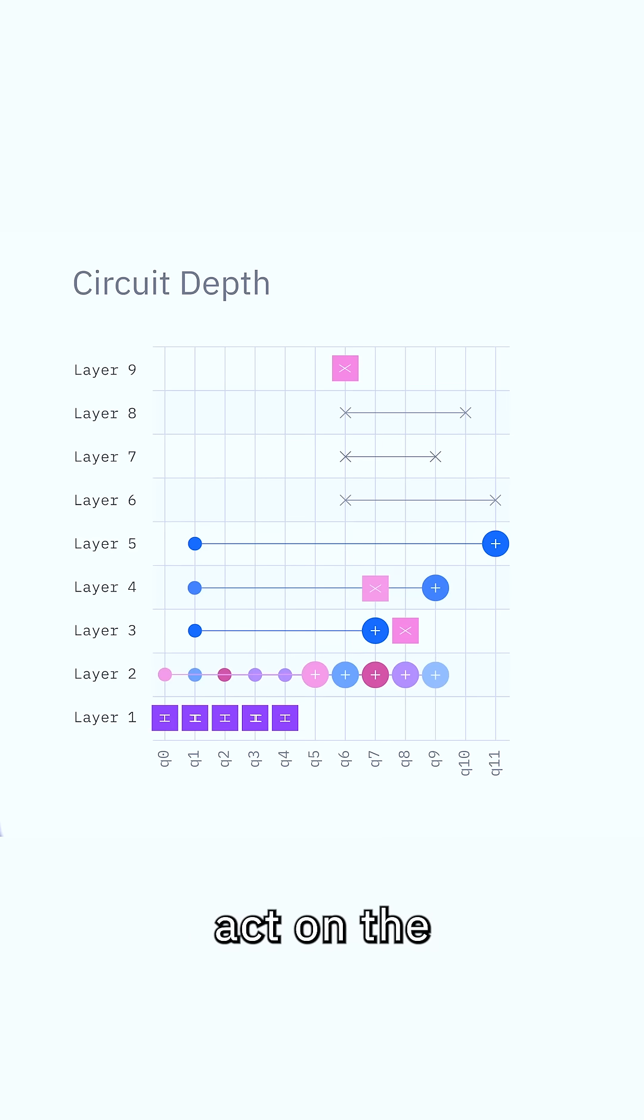But if two or more gates act on the same qubits, then we can't perform them in parallel. We're forced to perform them one after the other.